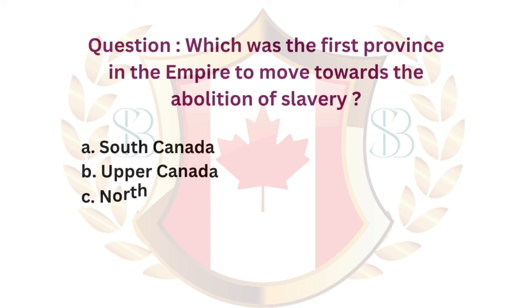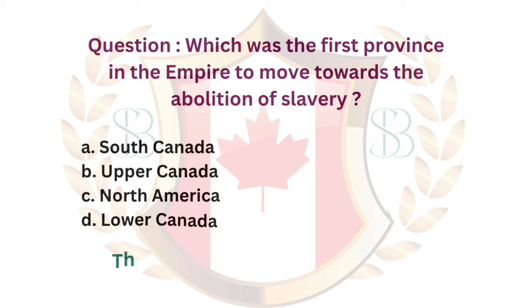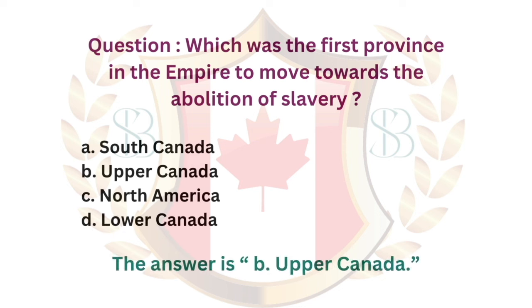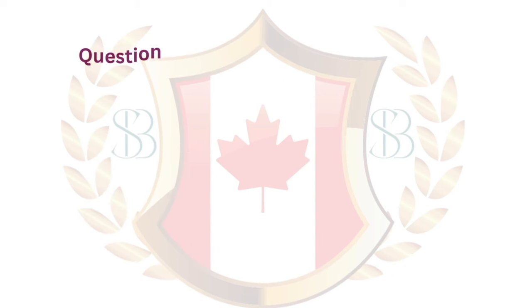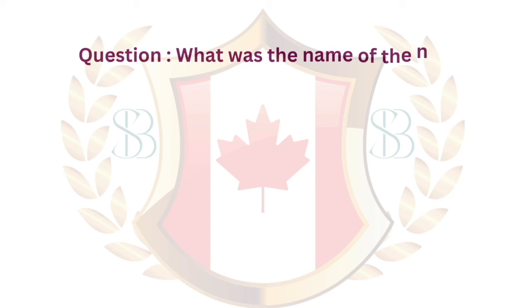Question. Which was the first province in the Empire to move towards the abolition of slavery? a. South Canada. b. Upper Canada. c. North America. d. Lower Canada. The answer is b. Upper Canada.